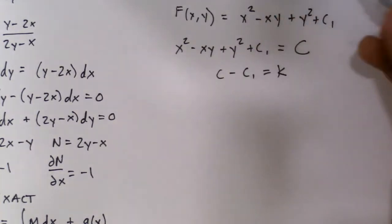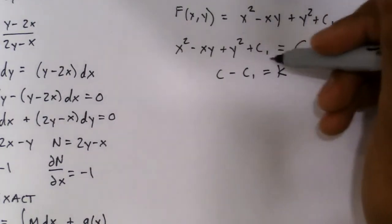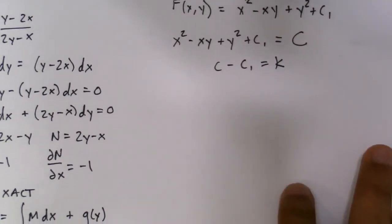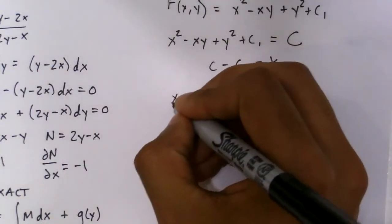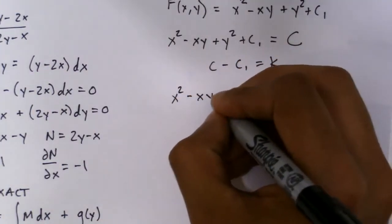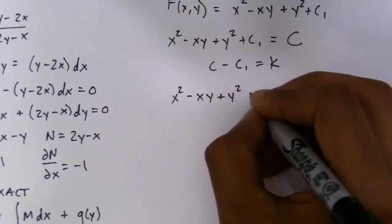Or it could be adding, it does not, this could be negative, whatever. Okay, so the general solution to this exact differential equation is x squared minus xy plus y squared equals k.